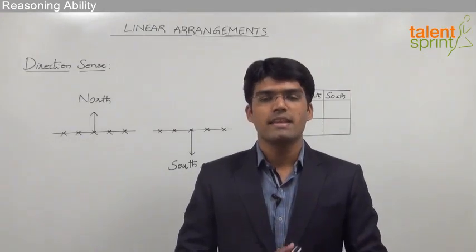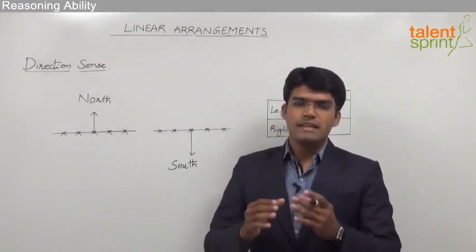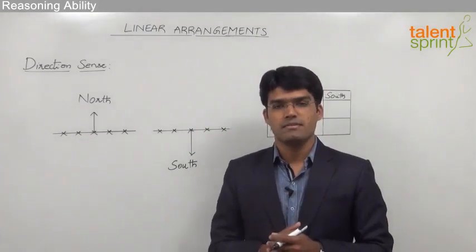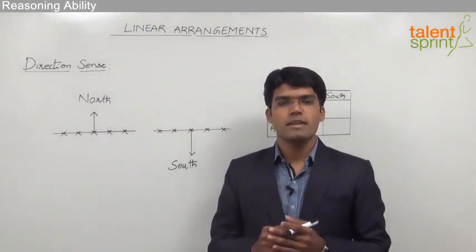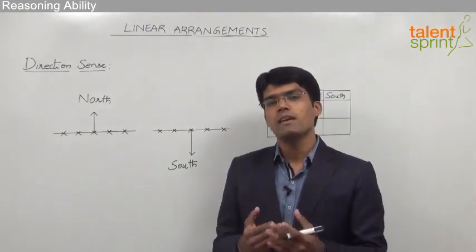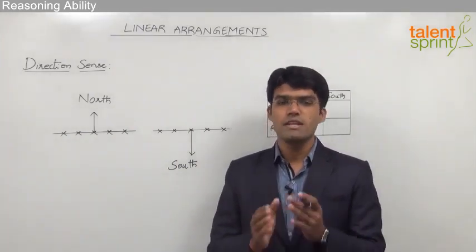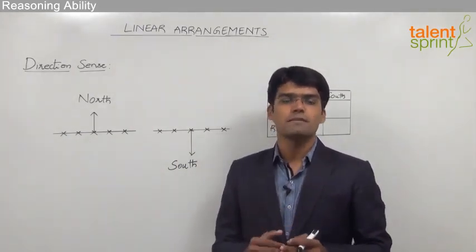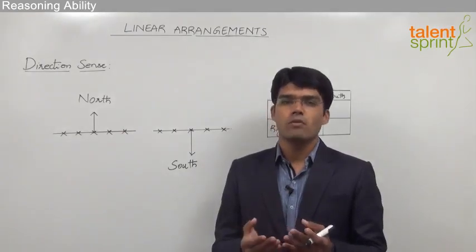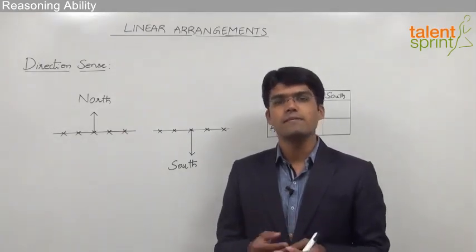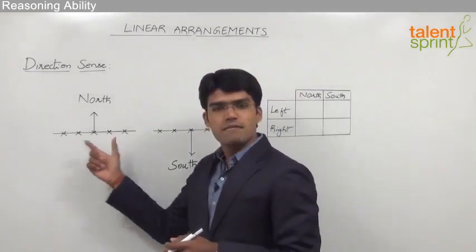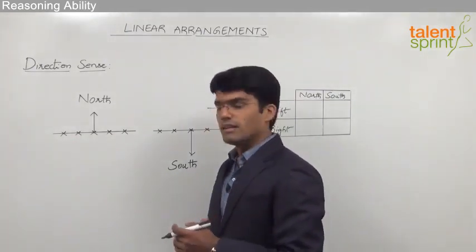Let's first look at the direction sense. In case of linear arrangements, they can be generally classified into two types: the first one is persons facing north and the second one is persons facing south. So we need to understand what will be the left or right of a person when he is facing north and what will be the left or right when he is facing south.